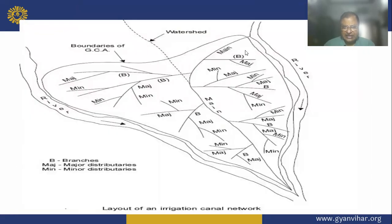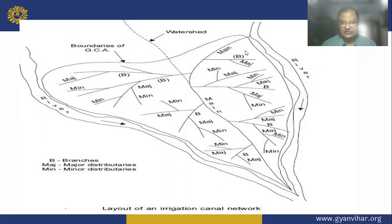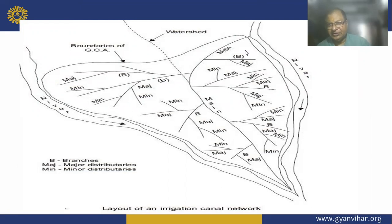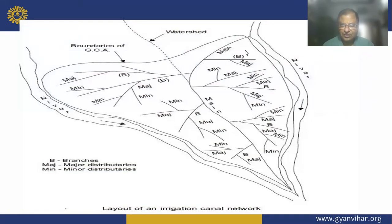This is the line diagram of the main canal, branch canal, distributory, and watercourse — showing the hierarchical irrigation distribution network.